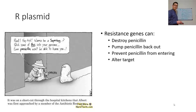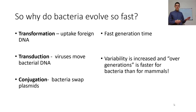Whatever way it happens, this is how DNA can be swapped between bacteria. So, to summarize why bacteria evolve so fast: transformation, transduction, conjugation, fast generation times, and increasing variability.